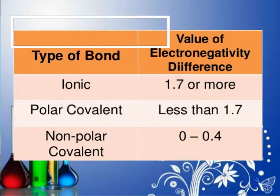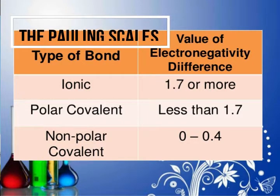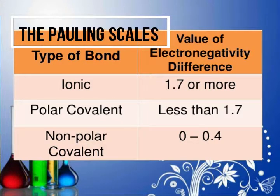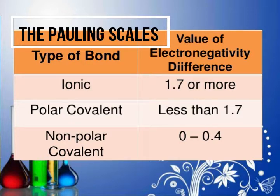I have here a Pauling scale system to determine the types of bonds based on electronegativity difference values. Ionic bonds have a difference of 1.7 or more. Polar covalent bonds have a difference of less than 1.7. Non-polar covalent bonds have a difference of 0 to 0.4, which is very low.